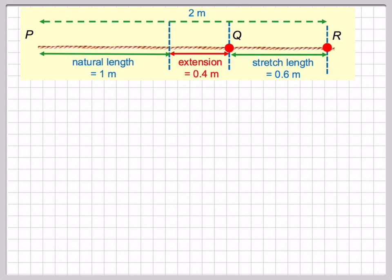So applying it to our situation, first of all, it's just extended to the point Q, so the total length is 1.4, so the extension would be 1.4 minus 1, which is 0.4.